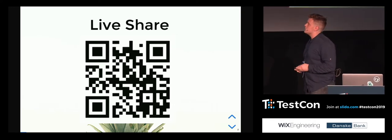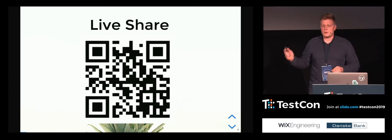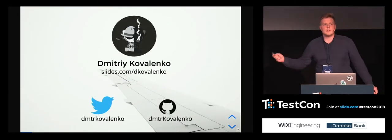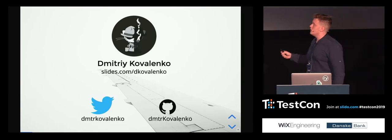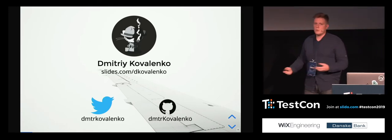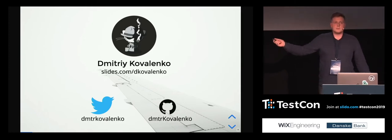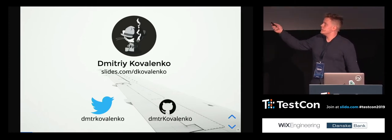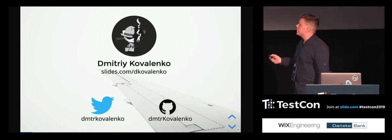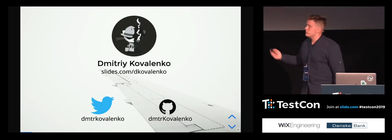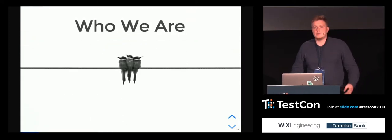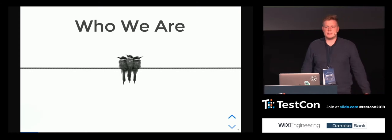It's the last seconds to share the QR code and we are starting. My name is Dmitry Kovalenko, I'm from Ukraine and I'm working at cypress.io. I'm doing something for the open source community. You can find me on GitHub, there's my Twitter, and also there is a link to the presentation slides so you can take this presentation right now.